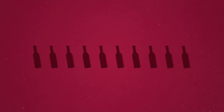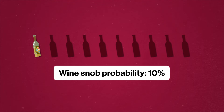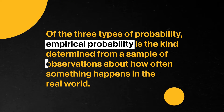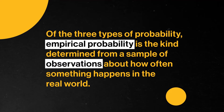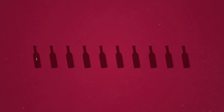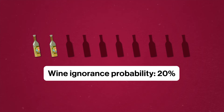Based on years of experience in keeping track of all the different tables, Angela knows the empirical probability a table wants detailed wine information, which is 1 in 10, or 10%. Empirical probability is the kind determined from a sample of observations about how often something happens in the real world. We also have the probability of a staff member not having wine knowledge, which is 2 in 10, or 20%.